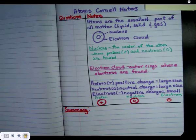Atoms are the smallest part of all matter. Matter is any solid, liquid, or gas. There are two main parts of the atom: the nucleus and the electron cloud. The nucleus is the center of the atom where protons and neutrons are found. The electron cloud are the outer rings where electrons are found.